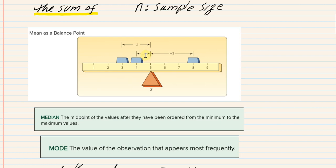Looking at deviations away from the center: if the score lies below the center, the deviation is negative — this one has a negative 2 deviation. If the score lies above the mean, that deviation is positive. Notice that if you add negative 2, negative 1, and 3, it adds to zero. This is not a coincidence — it's a mathematical phenomenon. The sum of the deviations from the mean is always zero.